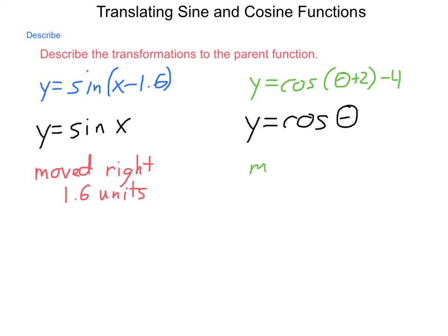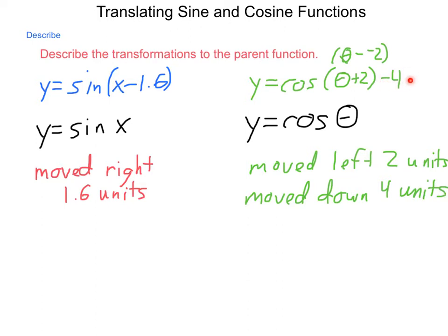It's been moved left two units, because this is really theta minus a negative 2. Or what would it take to make it inside that group 0? And the answer is negative 2. So that's a leftward movement. And it's been moved down four units, as signified by the minus 4 out here hanging on the end.